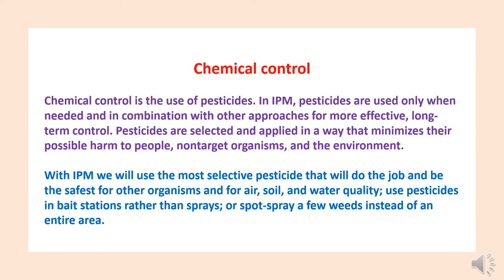Chemical control means use of pesticides to control pests. In integrated pest management, pesticides are used only when needed and in combination with other approaches for more effective long-term control. Pesticides are selected and applied in a way that minimizes possible harm to people, non-target organisms and the environment. We use the most selective pesticides that will do the job and be safest for other organisms and for environmental quality — air, soil and water. Pesticides should be used in bait stations rather than spray, or spot-spray a few weeds instead of the entire area, ensuring minimum use, localized placement, and consideration of health and environmental safety.